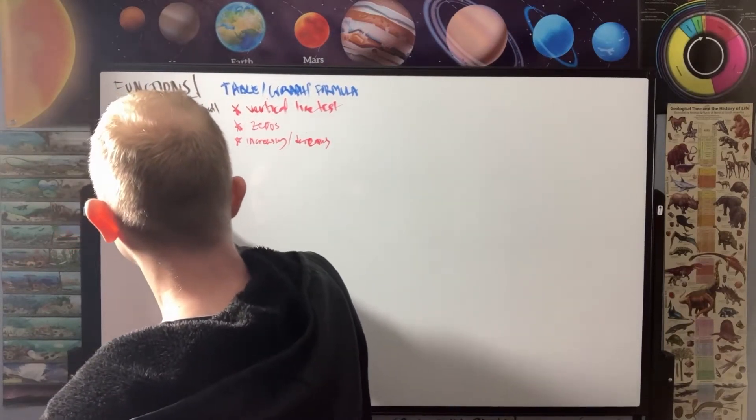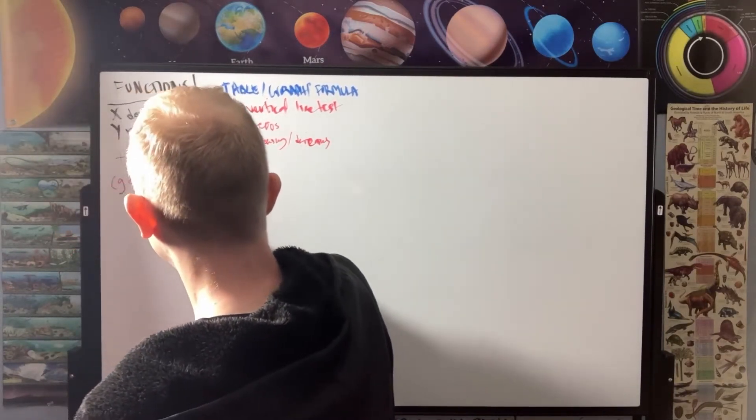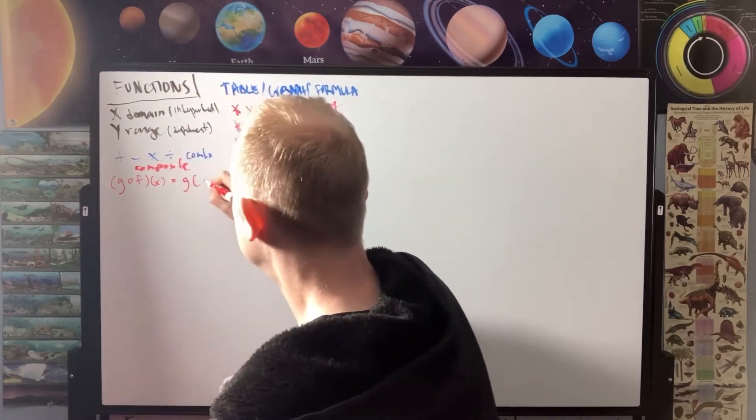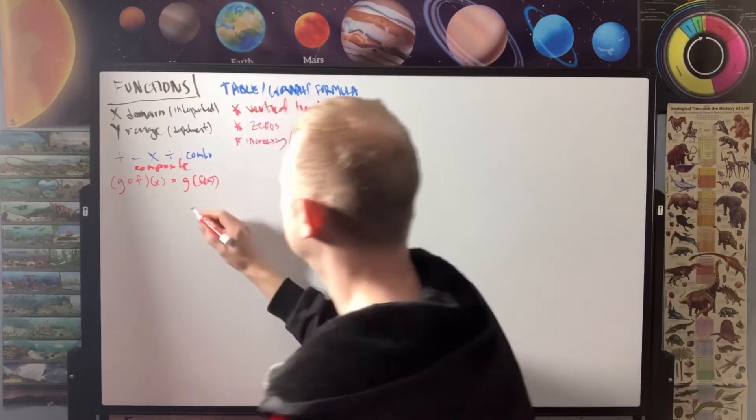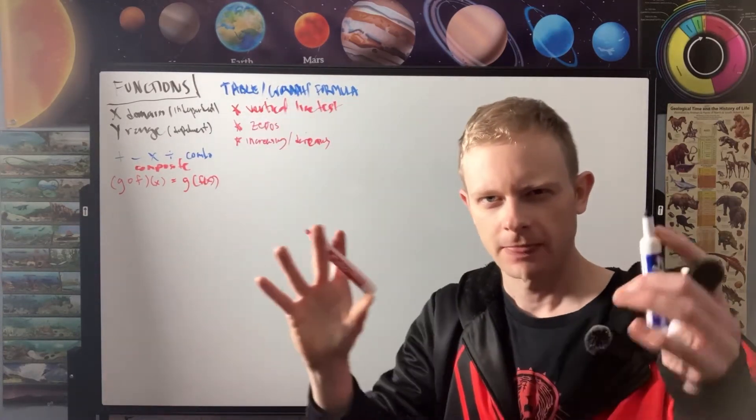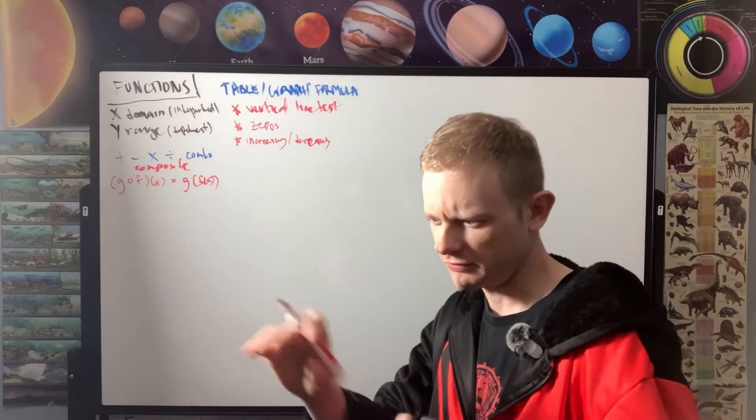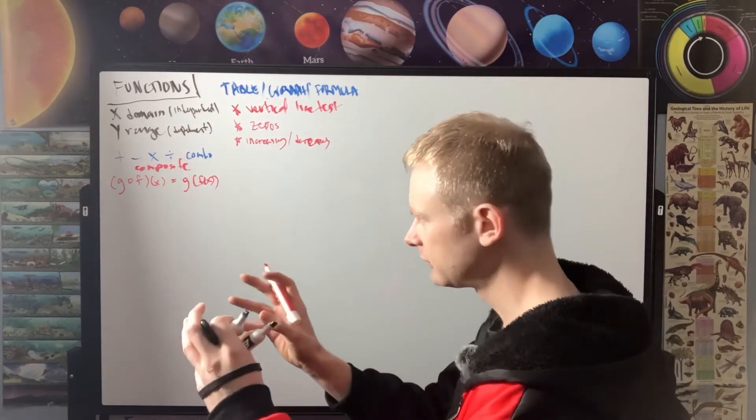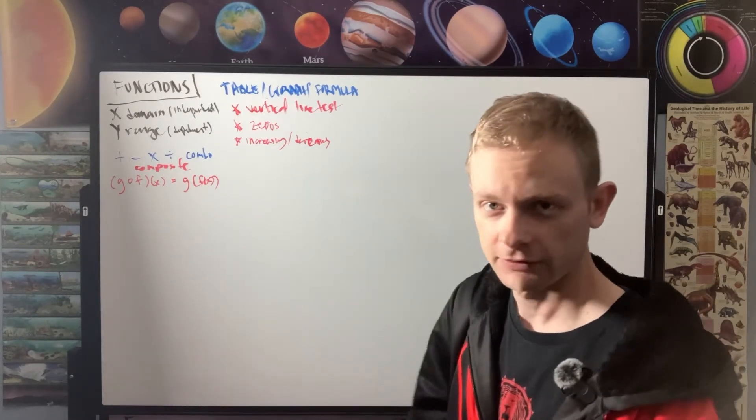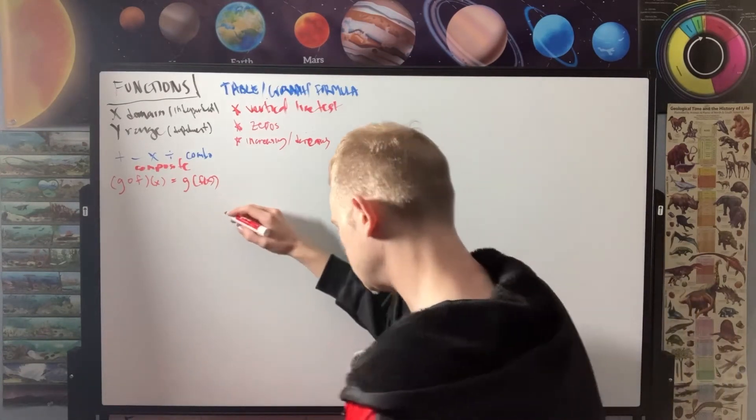That would be written as G circle F, something like that, with an X. And that would be simply G evaluated with the F of X function in there. So you stick that. Mind you, you got your Y equals MX plus B. And then for your X, all you're going to do is take the other function and stick that in there for X. So that's your composite functions.